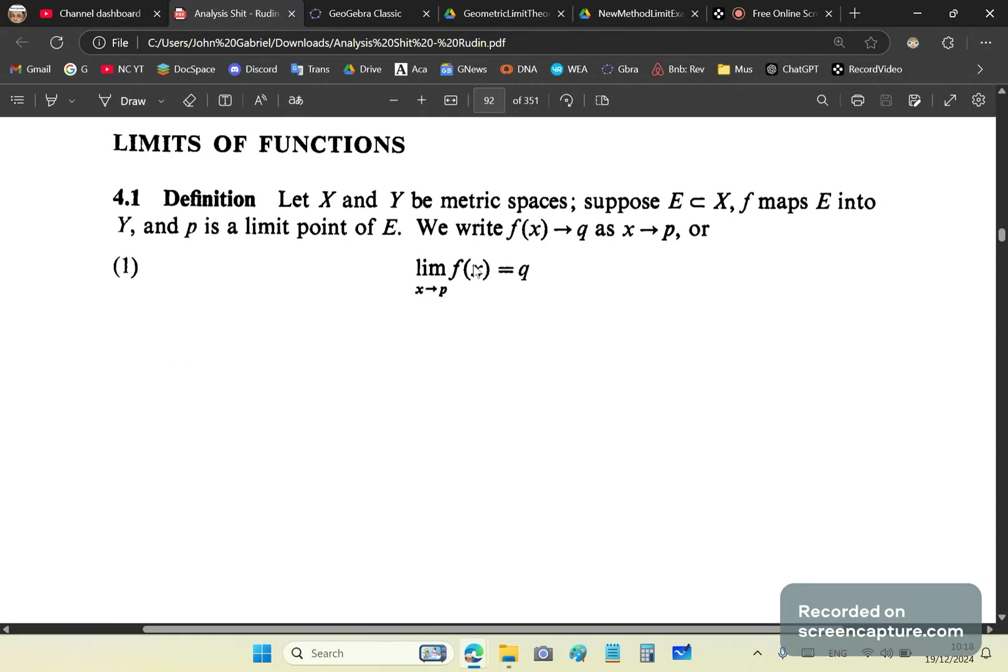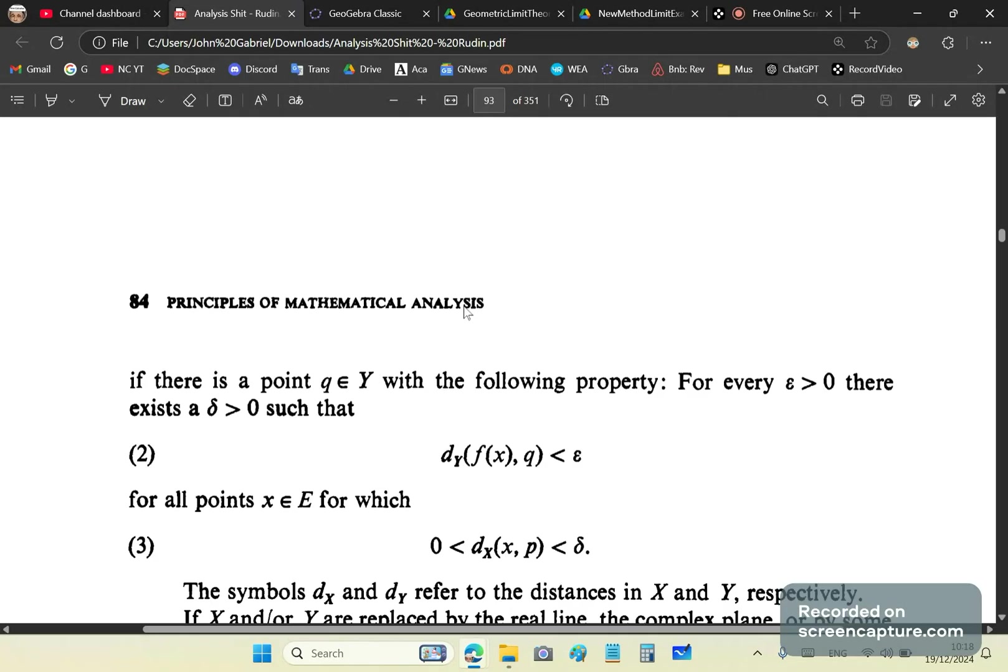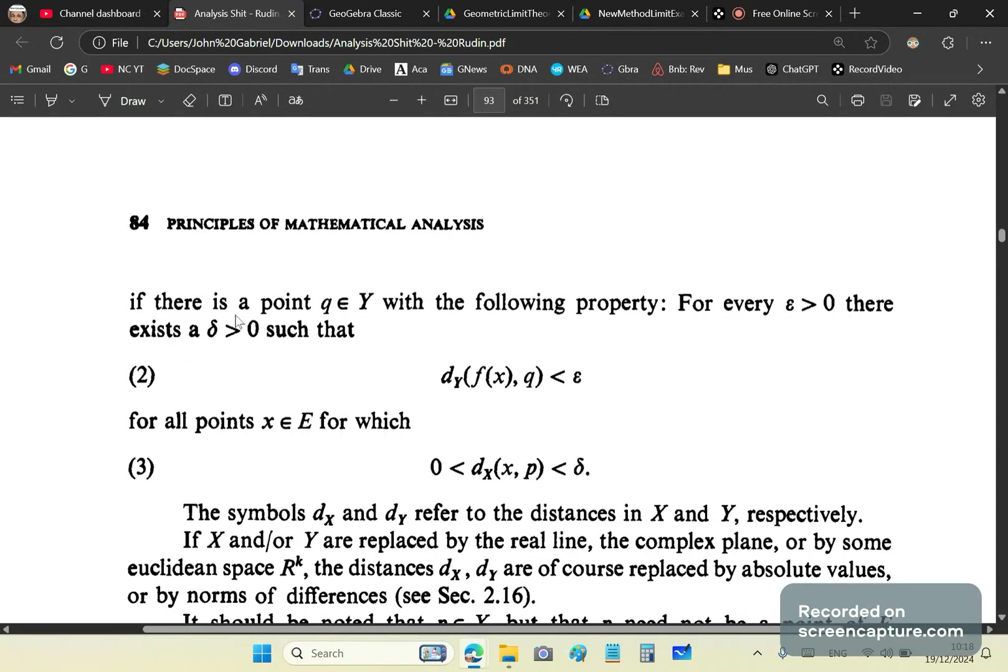He says the limit as X approaches P is Q, and then he defines what he means. He says if there is a point Q in Y with the following property: for every epsilon greater than zero, there exists a delta greater than zero, such that this distance metric is less than epsilon.